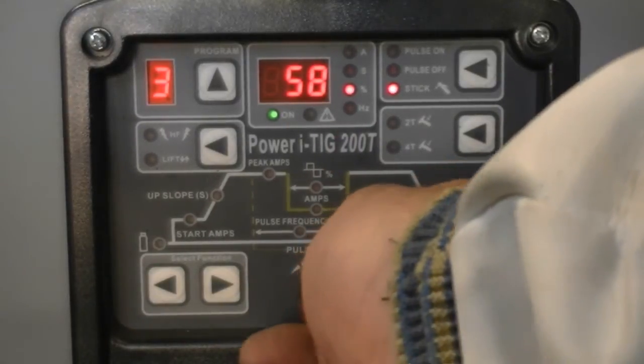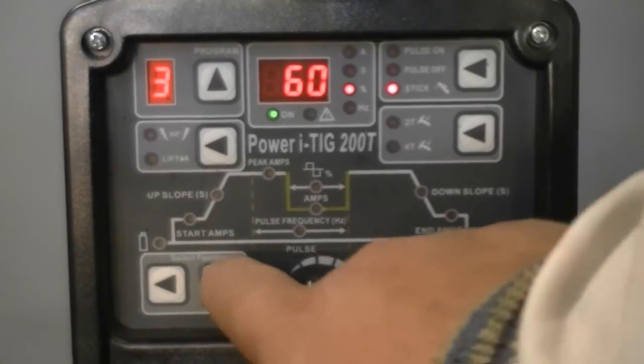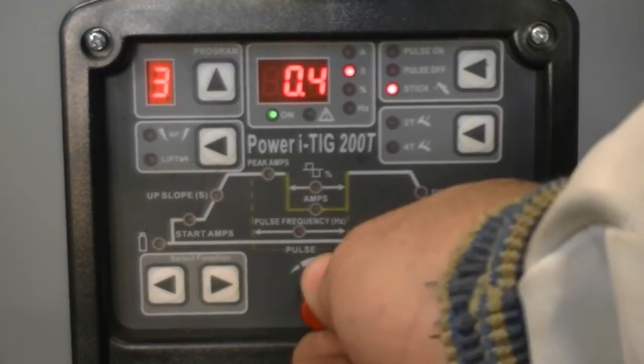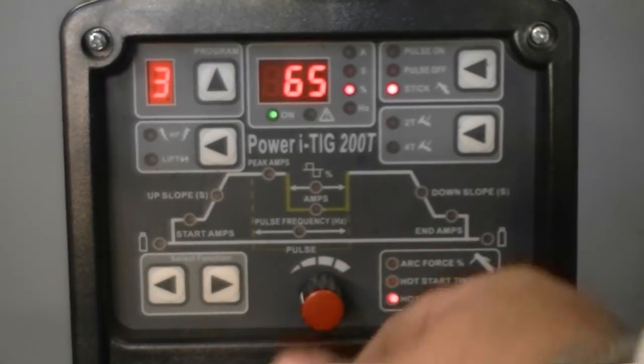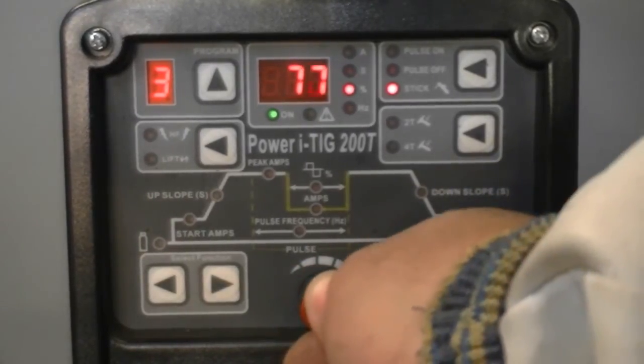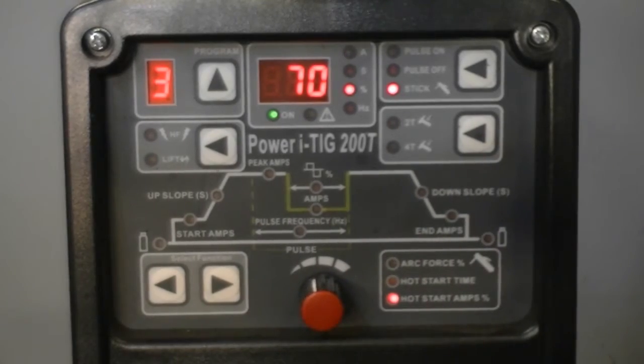I'm going to take the unit up to a conservative 60% arc force control. I'm also thinking that a hot start time of about 0.2 seconds might just work well on this rod. And I don't want to overdo it, so I'm setting the hot start at 70%.